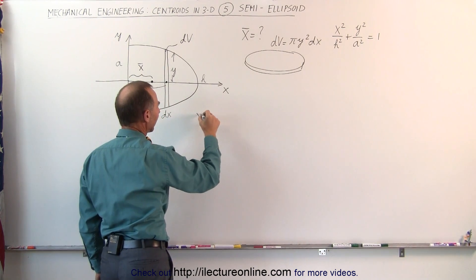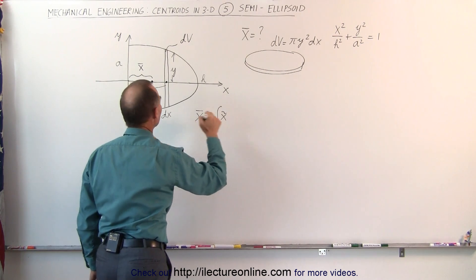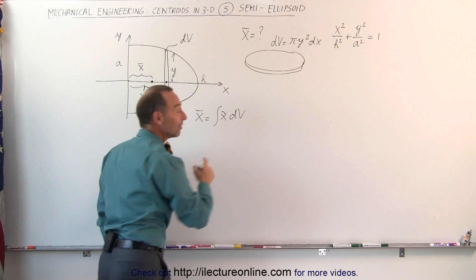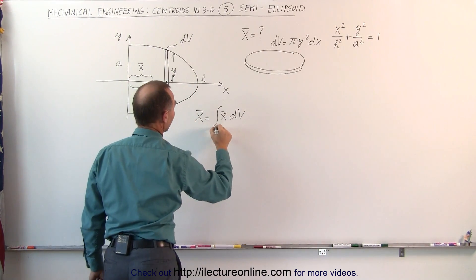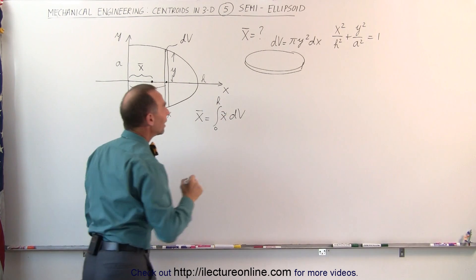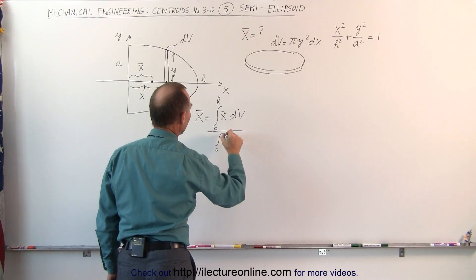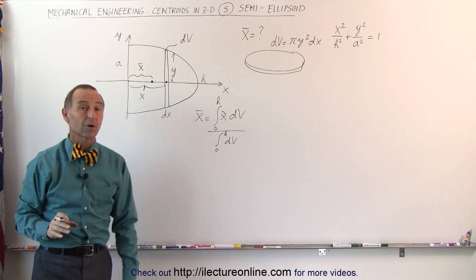And we know that we can find the x-coordinate of the centroid by taking the integral of the x-coordinate of the centroid, the small little slice, times the volume of that little slice, and integrating it from 0 to h. So the limits of integration will be from 0 to h, and then we divide that by the integral from 0 to h of dv, which gives us the volume of the semi-ellipsoid.